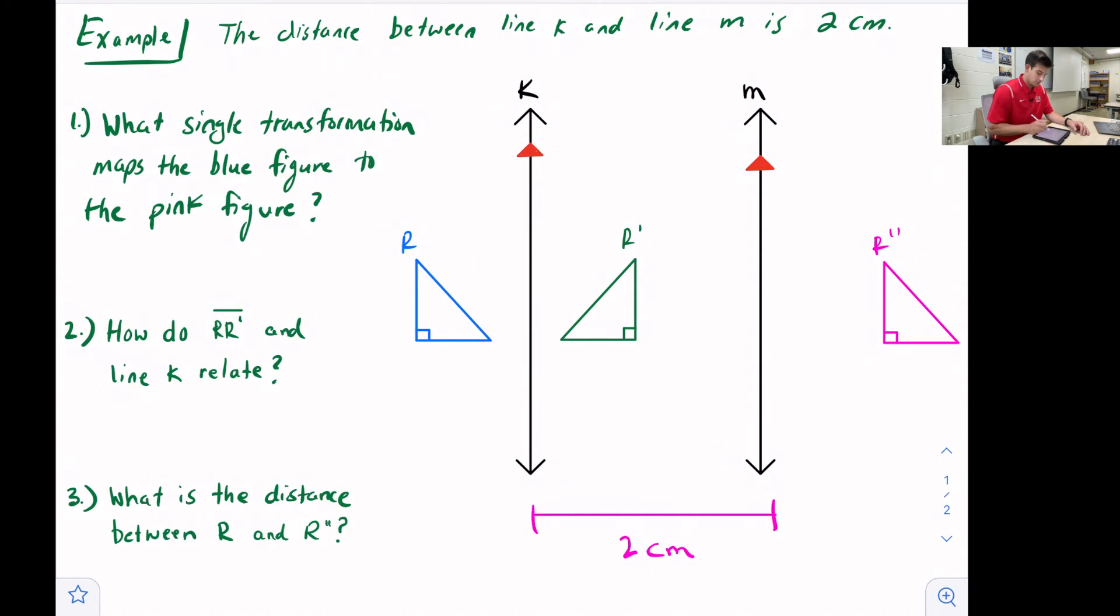So as you can see from the blue image to the pink image, that's the first question they're asking us. What single transformation maps the blue figure to the pink figure? Well, the orientation is the same, right? It's not turned, it's not flipped. The right angle box is in the bottom left-hand corner. So we could say this was simply a translation.